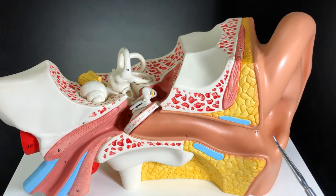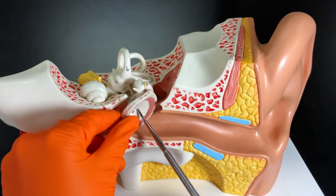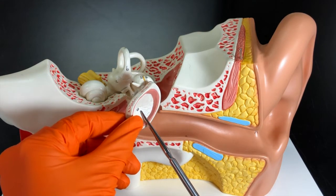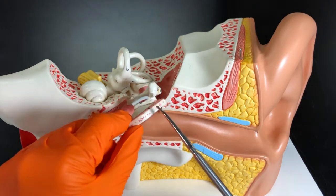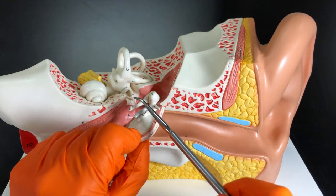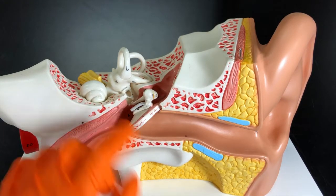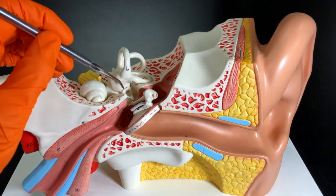That sound wave will hit that tympanic membrane, and the vibration will go along the auditory ossicles: the malleus, the incus, and the stapes. That vibration then gets amplified by the stapes via the oval window into the fluid inside the inner ear.